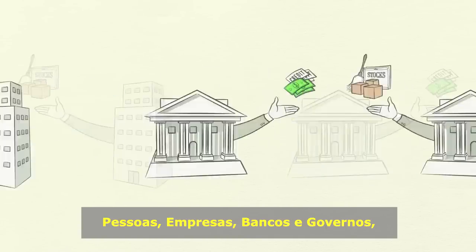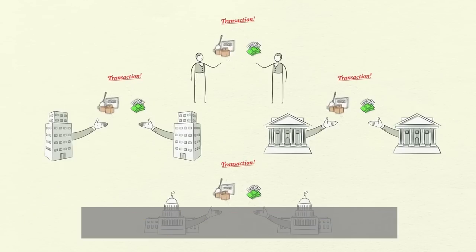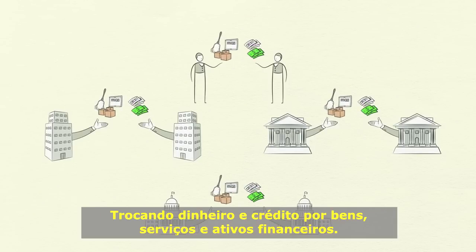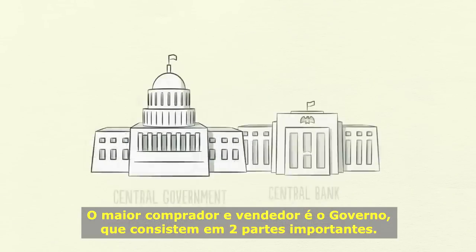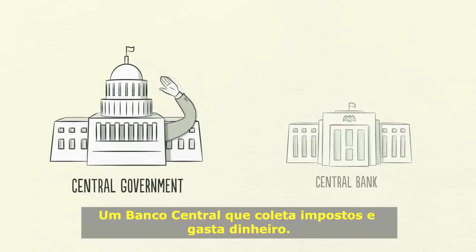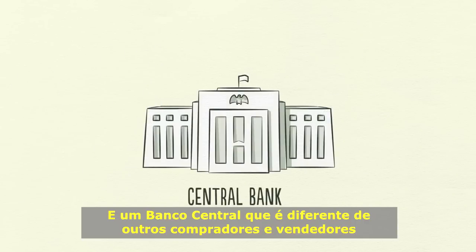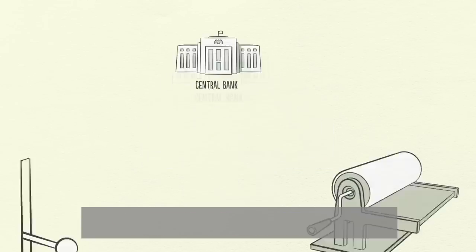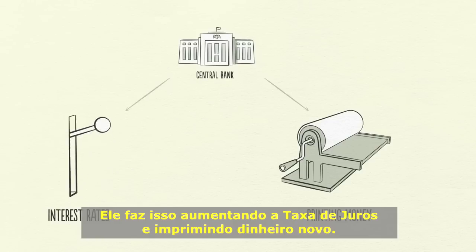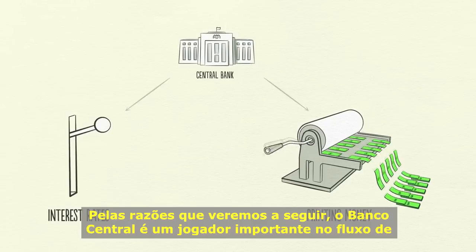People, businesses, banks, and governments all engage in transactions, exchanging money and credit for goods, services, and financial assets. The biggest buyer and seller is the government, which consists of two important parts: a central government that collects taxes and spends money, and a central bank, which is different from other buyers and sellers because it controls the amount of money and credit in the economy. It does this by influencing interest rates and printing new money. For these reasons, the central bank is an important player in the flow of credit.